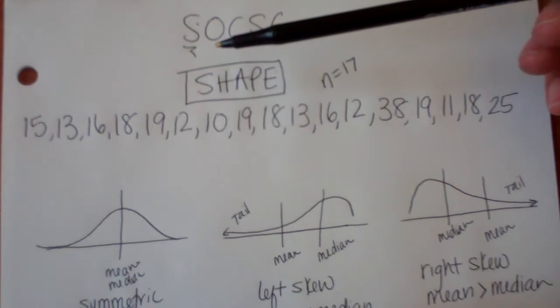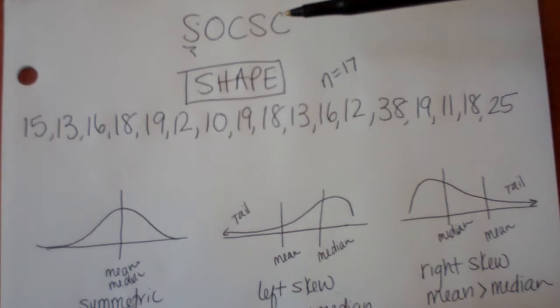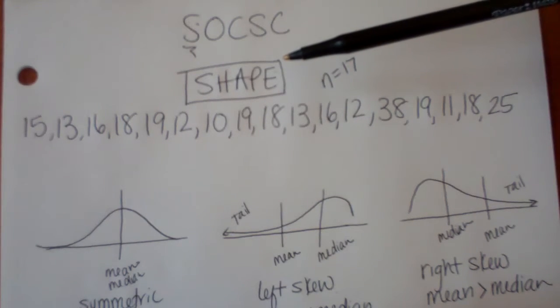Let's just remember what each letter represents. S is for shape, O is for outlier, C is for center, S is for spread, and C is for context. And so today we're going to be doing that first S, which is shape.